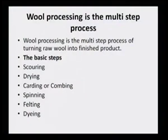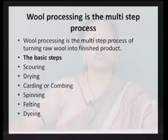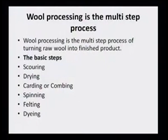Wool processing is a multi-step process. Even before it can be taken for dyeing, there are various processes or pre-treatments that the wool must go through for getting to the finished product. Wool processing is the multi-step process of turning raw wool into a finished product, and the basic steps involved are scouring, drying, carding or combing, spinning, felting, and then the final step of dyeing.